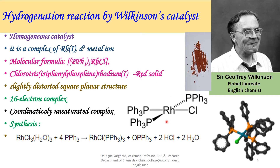It is a red solid, and rhodium is in the plus 1 oxidation state. It has a distorted square planar structure, is coordinatively unsaturated, and has a 16-electron species.